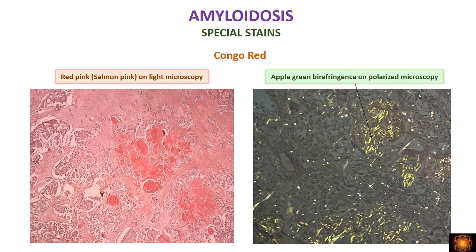Now for special stains used to demonstrate amyloid: the most commonly used is Congo red. With Congo red, amyloid deposits take up a red-pink or salmon-pink color on light microscopy. The same tissue viewed under polarized microscopy shows apple-green birefringence wherever there is an amyloid deposit.